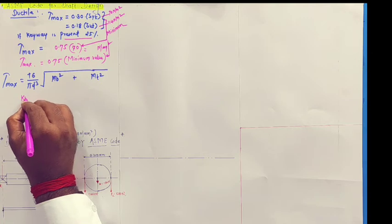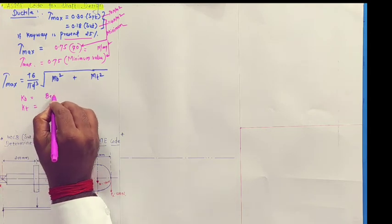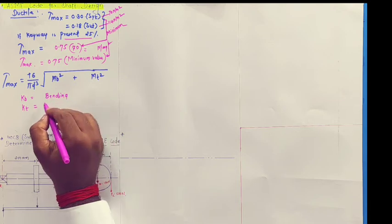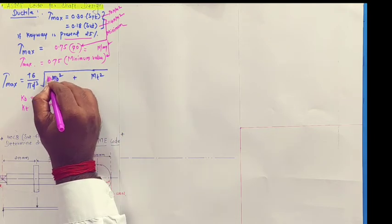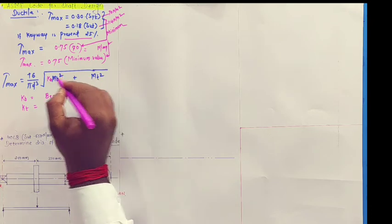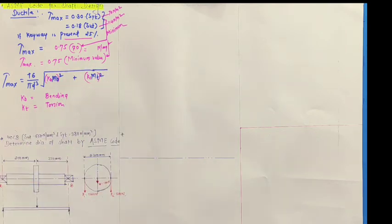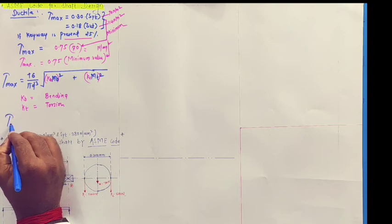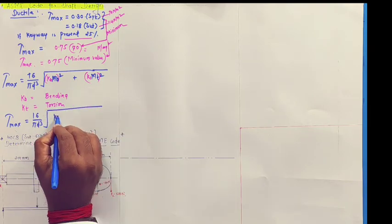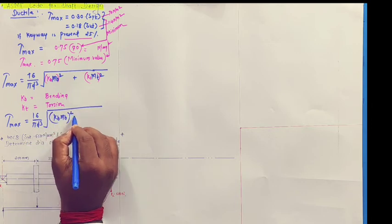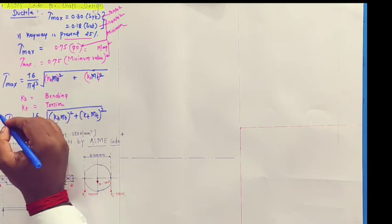What is Kb? Kb is combined shock and fatigue factor for bending, and Kt means combined shock and fatigue factor for torsion. So, here, I will write Kb Mb square, Kt Mt square, both the square. So, my equation would be, tau max is equal to 16 by pi d cube square root of Kb Mb square plus Kt Mt square, and this value we have calculated from ASME.